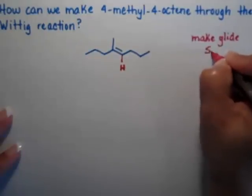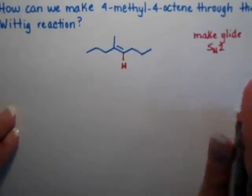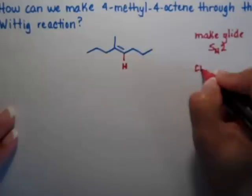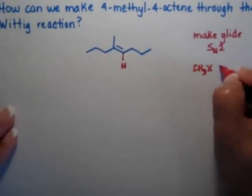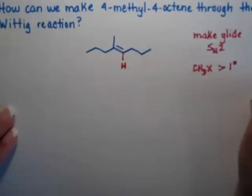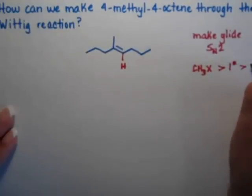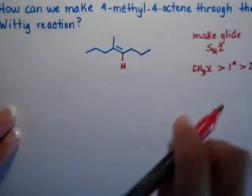If we're going to have a good SN2 reaction, we're going to need the most unhindered alkyl halide possible. So, methyl halide would be a much better choice than a primary, and the primary would be a much better choice than a secondary.